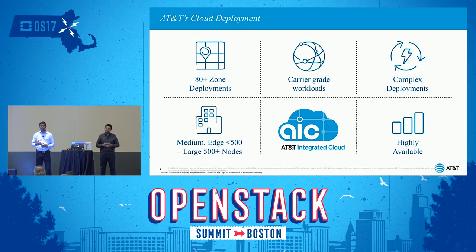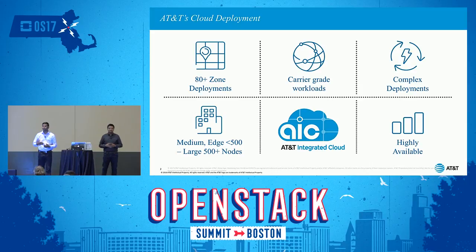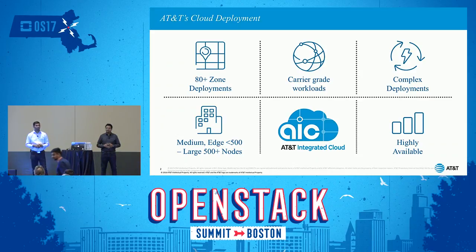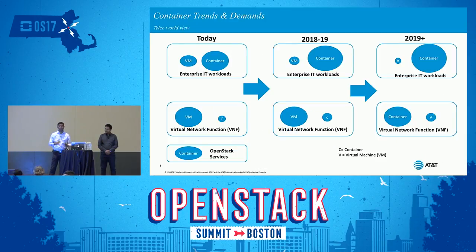When we talk about scale — supporting VMs and containers — we have to think about large scale. Developers sometimes forget about large scale when coding configurations for containers or VMs. We need to think about how to support large deployments. The AT&T Integrated Cloud is really about supporting highly available applications. For example, a 911 call hosted in the telco cloud has to be highly available — this is not a development lab; it's a production-ready cloud.